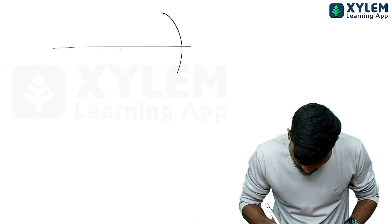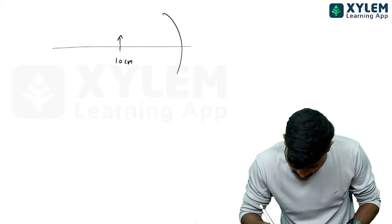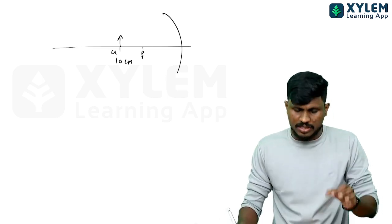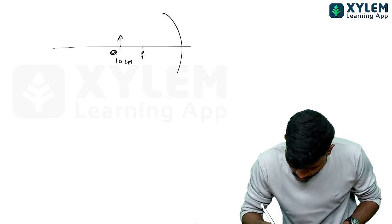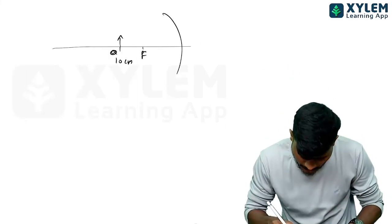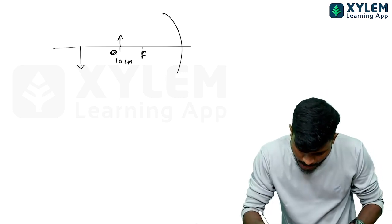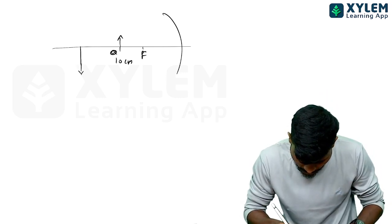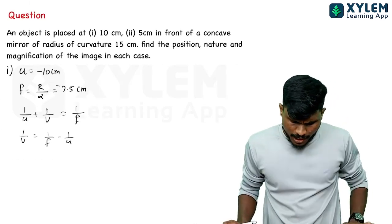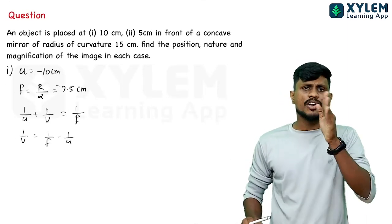For a concave mirror with u equals minus 10cm and focus 7.5cm, the object is placed beyond the focus. The image is formed at minus 30cm, which is in front of the mirror — a real image.